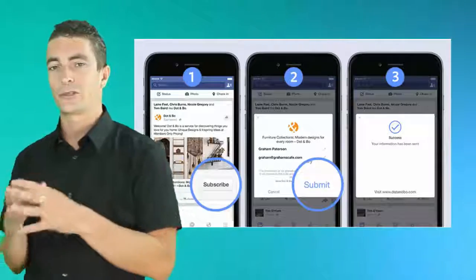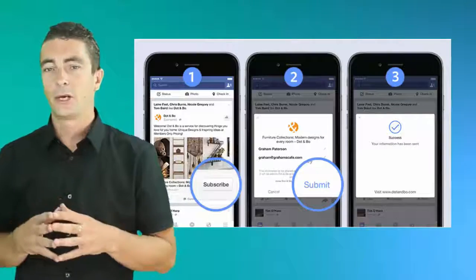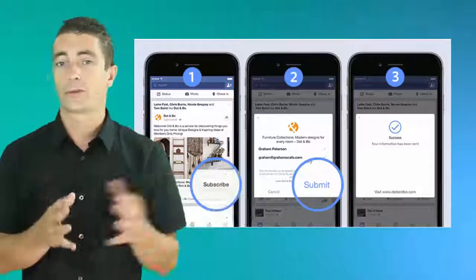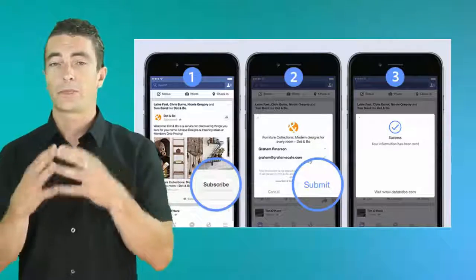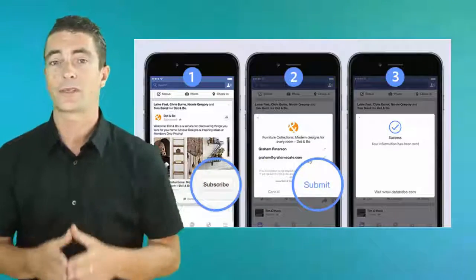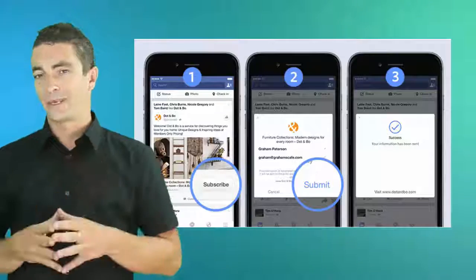Now what I'm going to show you is an image of the new list building method which is working for multiple Fortune 500 companies. It's working for our business and working for multiple offline businesses as well. This is just one example.